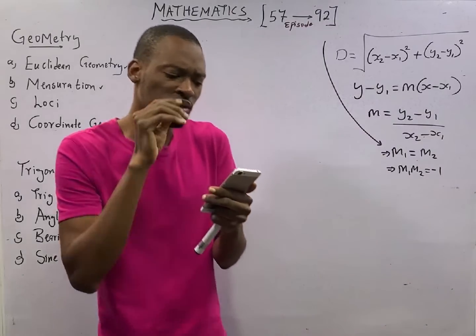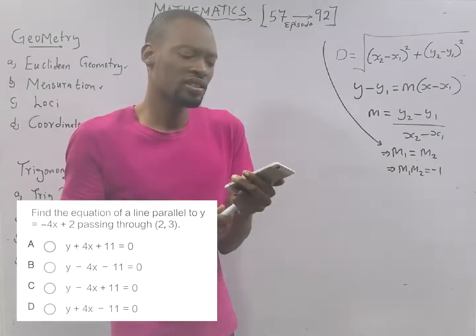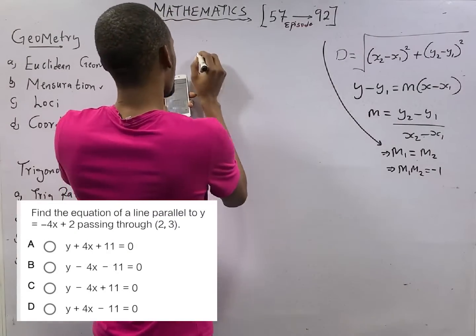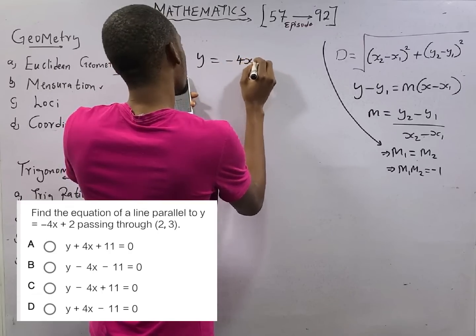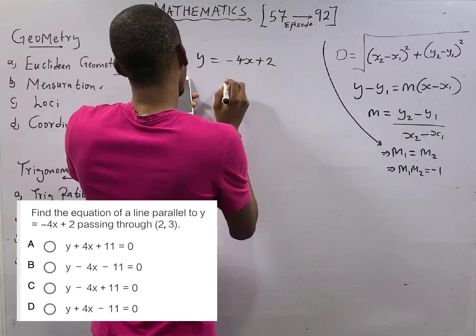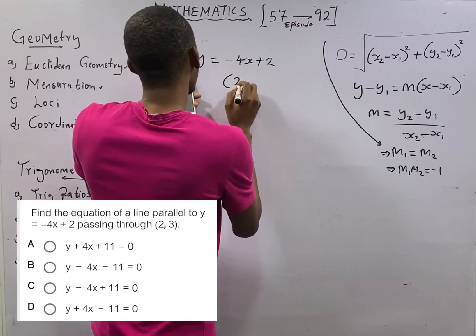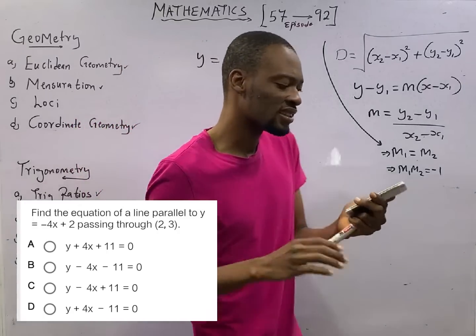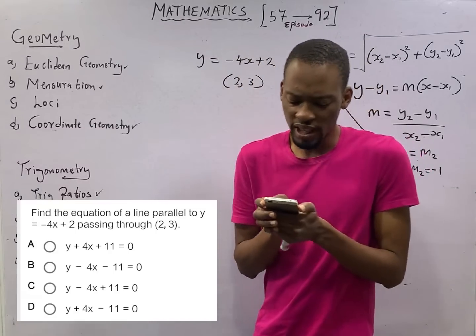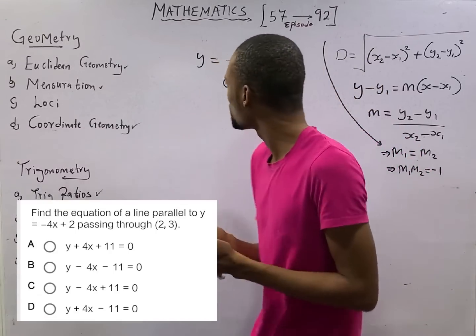The first question is: find the equation of a line that is parallel to y equals minus 4x plus 2, and it is passing through the coordinates (2,3). Equation of line that is parallel.